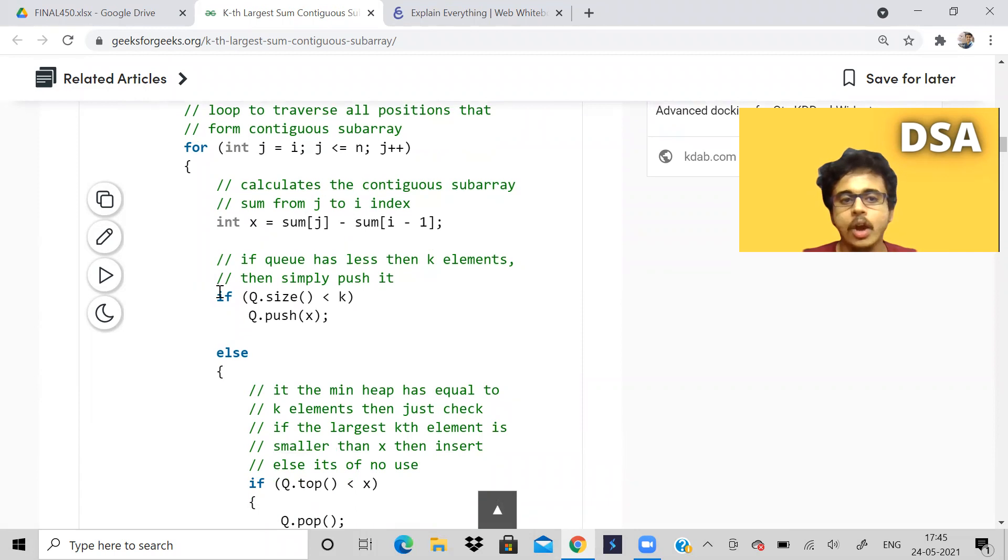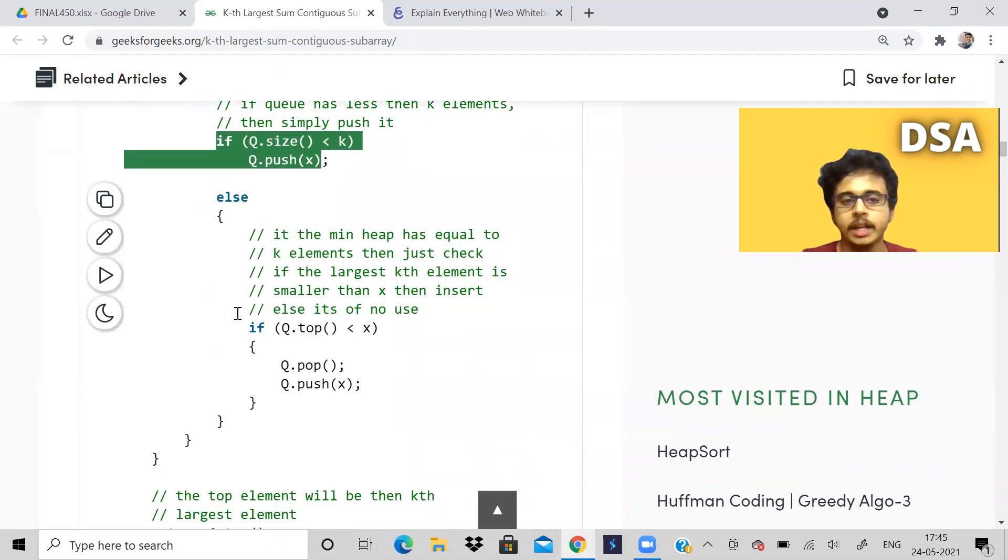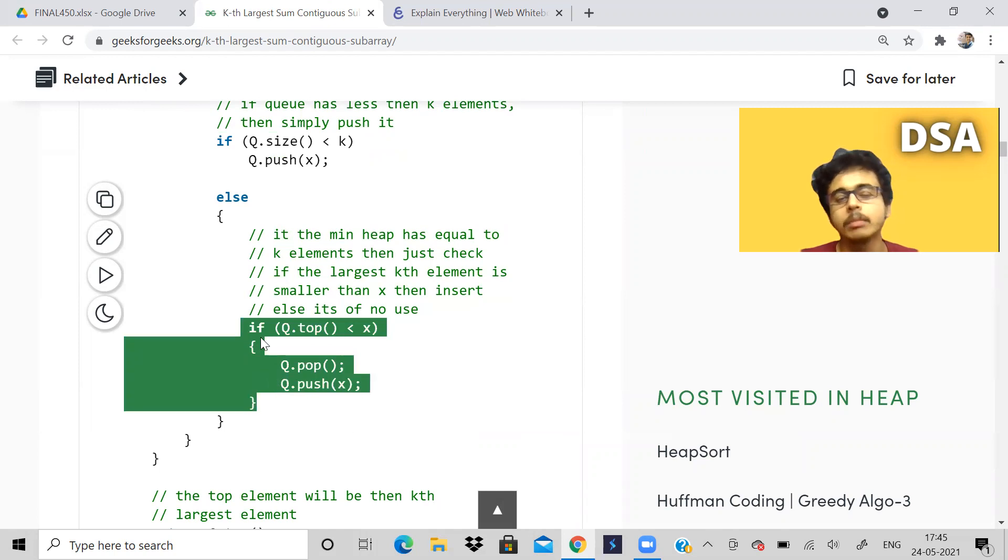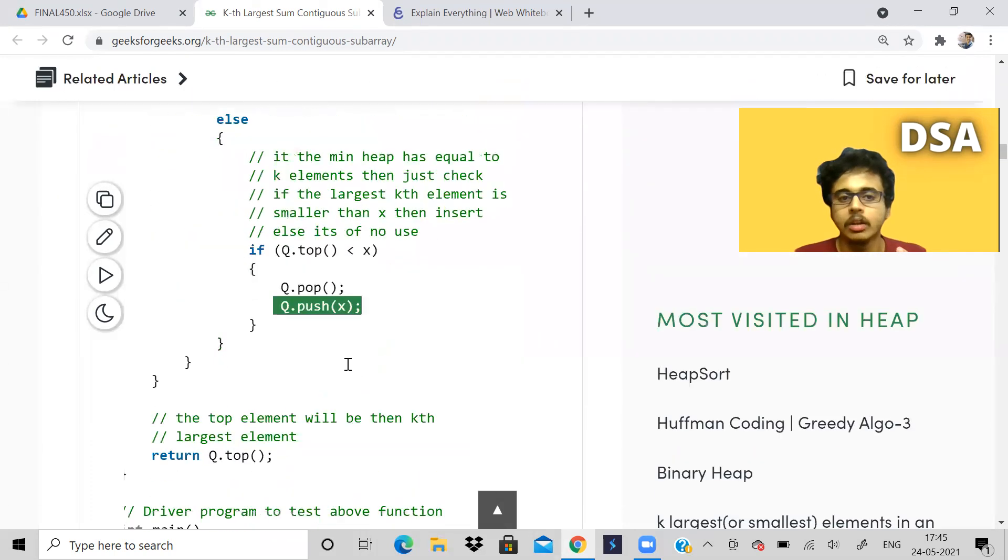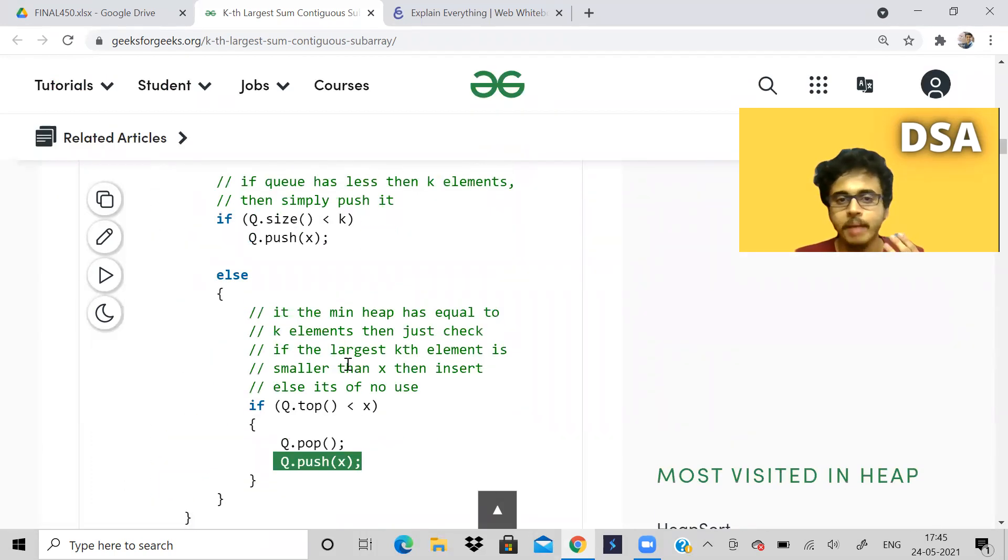Now they are using a priority queue and they are just inserting the elements in the min heap. Some of you might get confusion why min heap, why not max heap. Basically, they are checking the top element of the heap. If it is less than the sum, then they are removing that element and pushing the sum. If you keep doing this, ultimately at the top you will get the kth largest. You can't use a max heap because if you are using max heap, the top element will be maximum, and if you remove that, you will be distorting and you won't get the kth largest element.